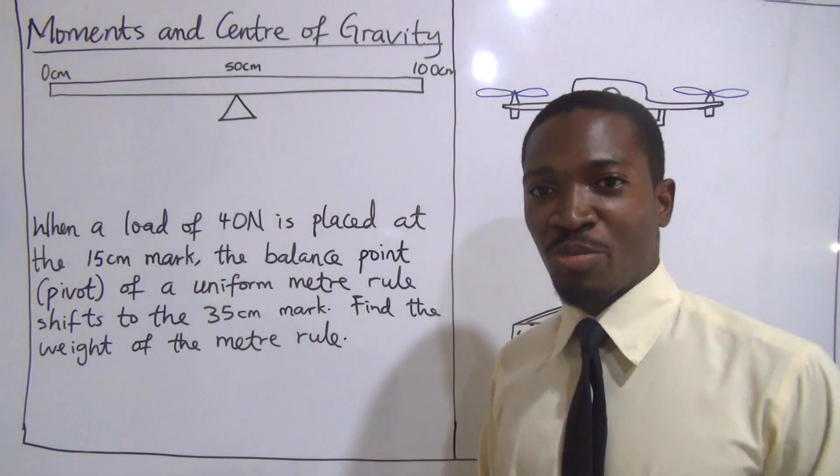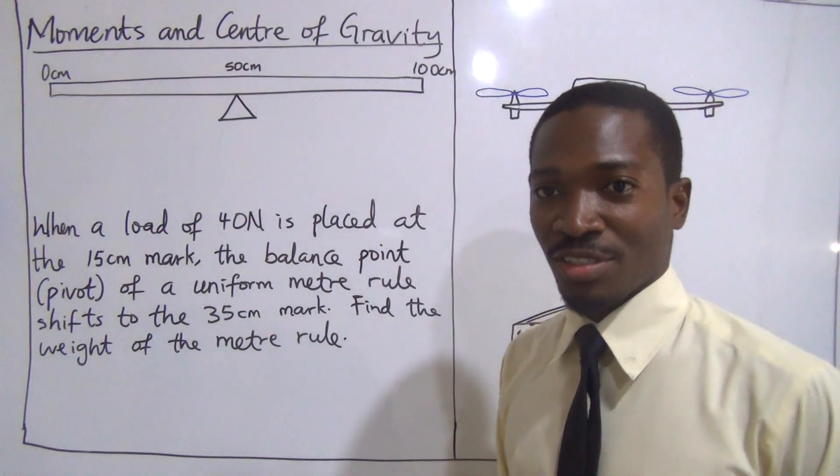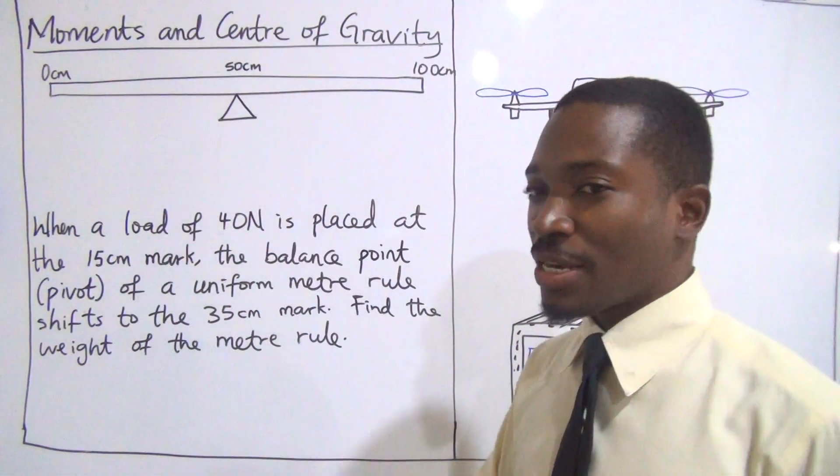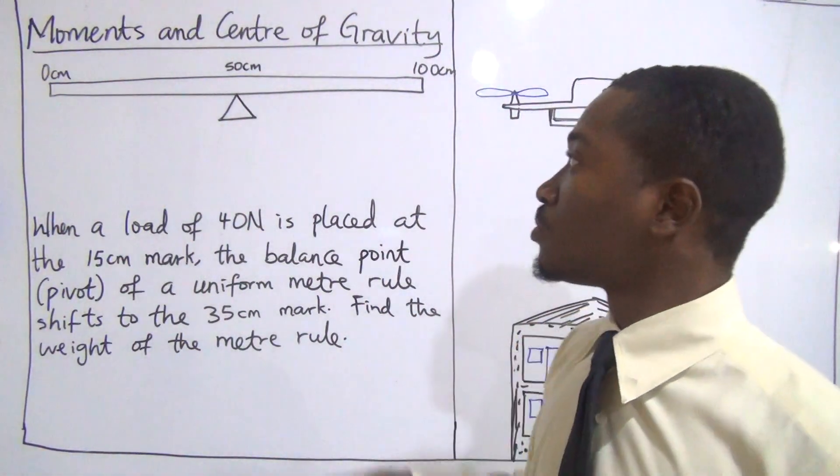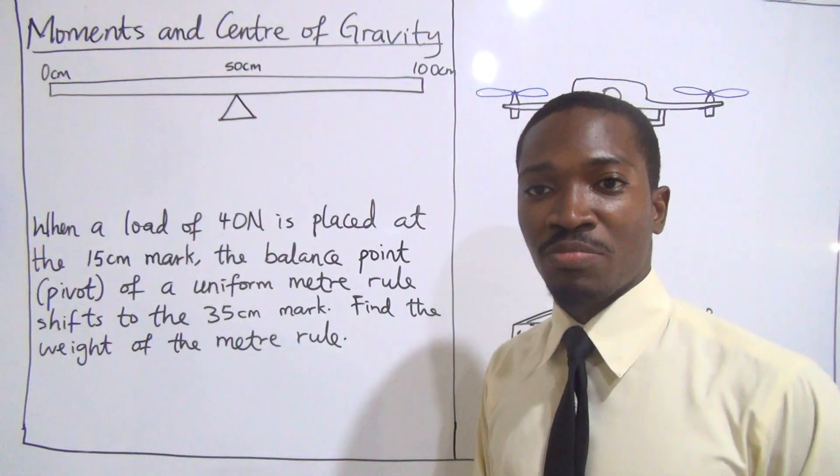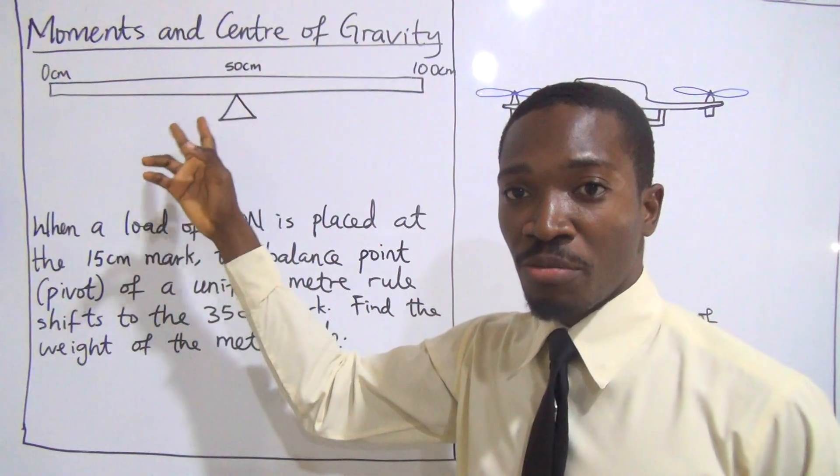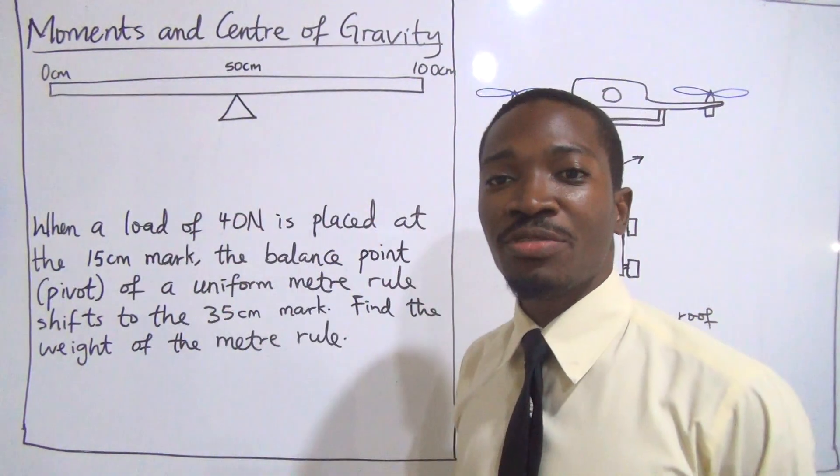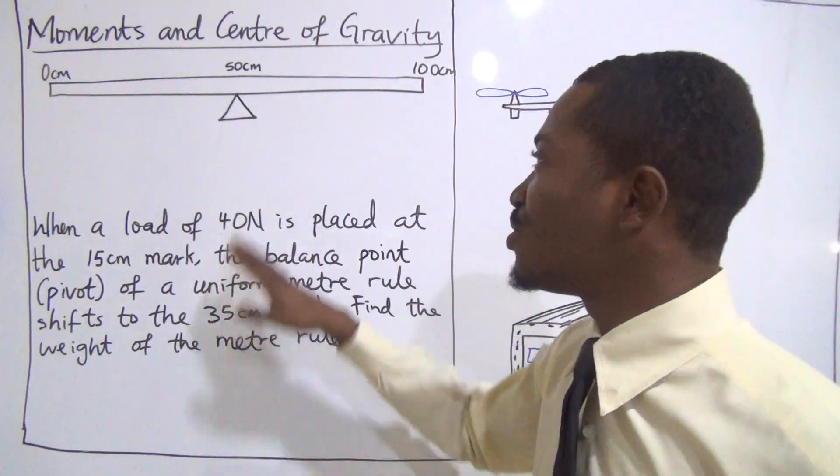Good day students. Today we will be talking about moment and the center of gravity. We all know that moment is a product of a force and a perpendicular distance of its line of action from previous videos. Now I want to talk about this beam that is in equilibrium. If we consider this to be a uniform meter, that means the center of gravity will be at the 50 centimeters mark.